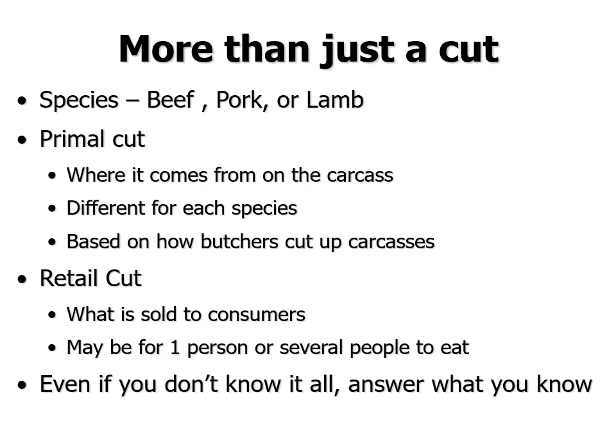The retail cut is what's usually sold to consumers. A lot of times we think of something one person could eat, like a ribeye steak or a pork chop, but it may be something that several people eat, like a brisket, a rack of ribs, or a pot roast. It's going to be something sold to consumers — something you could buy at a grocery store or purchase at a restaurant.